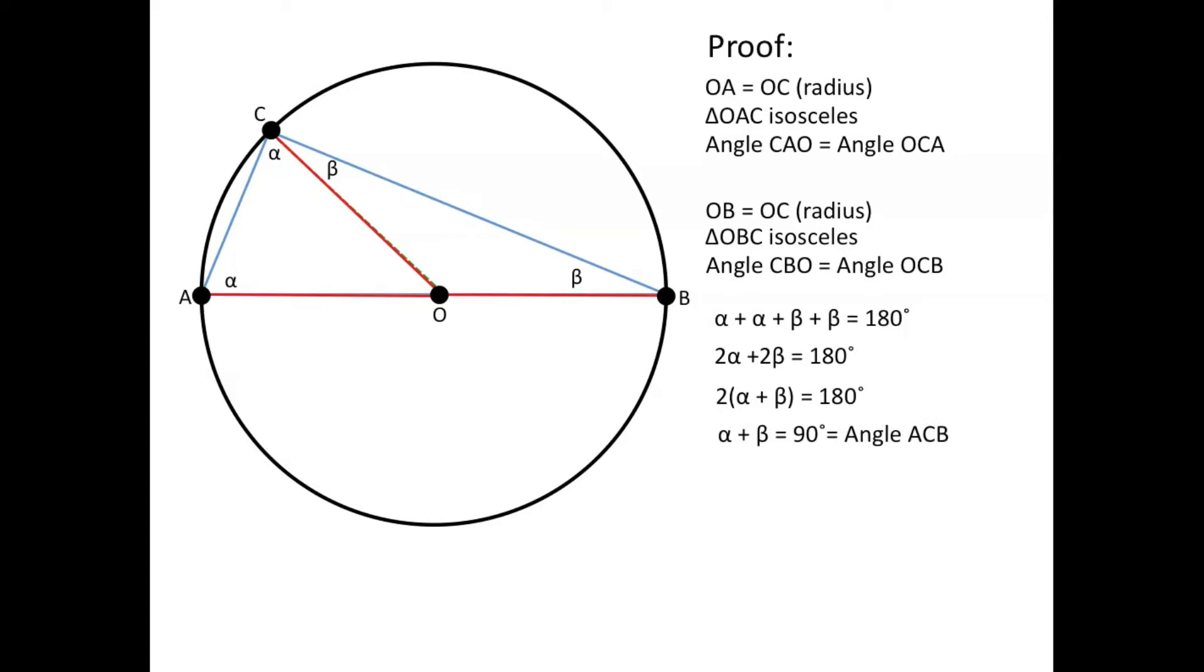And in our diagram we see that angle ACB is represented by alpha plus beta. So that shows that angle ACB is equal to 90 degrees, and since the angle subtended from point C is 90 degrees, then we've proved Thales Theorem.